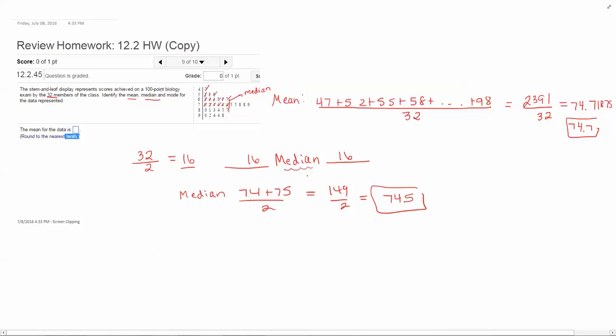The final answer is the mode. The mode is the data value that repeats most often. We have lots of repeating leaves here. When you're looking at a stem plot, you are looking for numbers that repeat that are right next to each other.